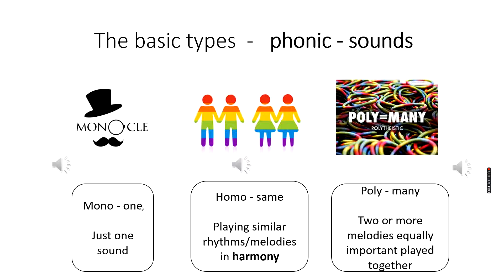The last one is polyphonic. Poly means many, so polyphonic means many sounds. This is where you have two or more melodies that are equally important. In this example you're going to hear a melody at the beginning played on the piano. This melody is going to be heard again a bit lower while the other hand is doing something more impressive. There are going to be many different melodies happening at the same time, which creates a polyphonic texture.